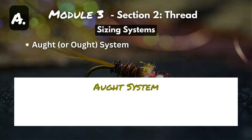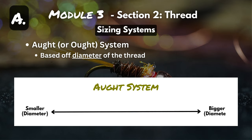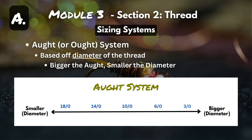The first is the aught system, and this is based off the diameter of the thread. The bigger the aught, the smaller the diameter. So on the left side you've got 18-aught and 14-aught — the diameters of those threads are going to be smaller than that 6-aught on the right-hand side.